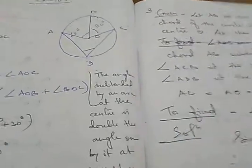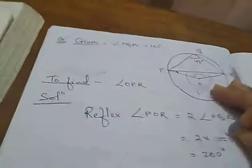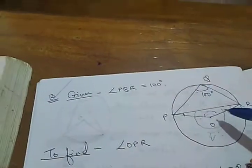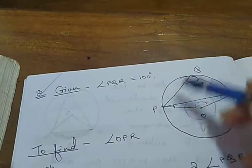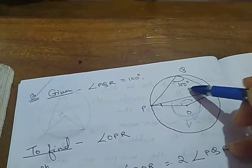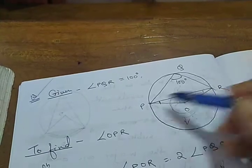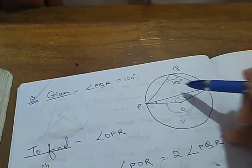Now, next question number 3. Given that angle PQR is 100 degrees, and we have to find out angle OPR.